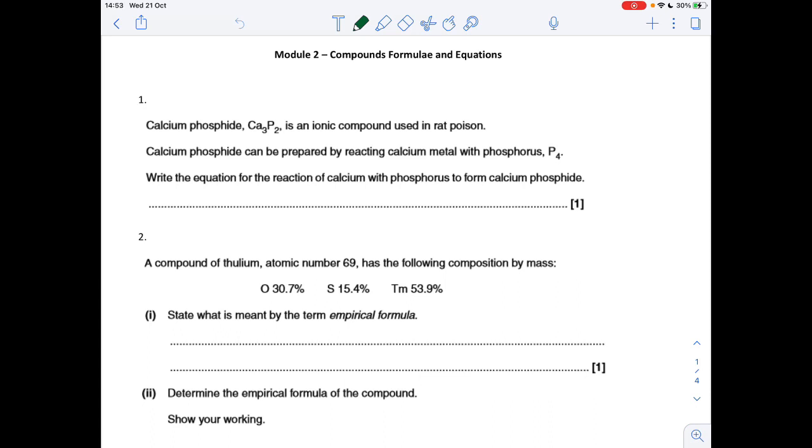Okay, so question one, write the equation for the reaction of calcium with phosphorus to form calcium phosphide. So that's calcium plus P4 going to Ca3P2. So to balance that, we need a 6 in front of the calcium and a 2 in front of the Ca3P2.